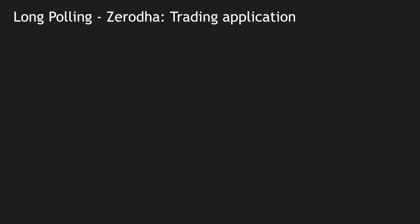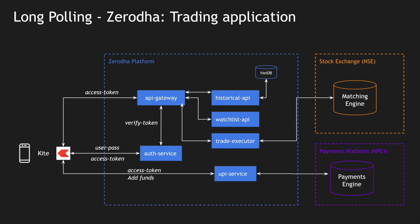Now let's look at when to use these techniques. First, long polling. Zerodha is a trading application similar to Robinhood in the US. The platform has a mobile application, a web application, an API gateway, historical APIs, a watchlist API, a trade executor API, an authentication layer, and a UPI service which is a payment engine. UPI stands for Unified Payment Interface, which is specific to India — imagine it like any payment gateway.